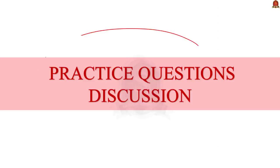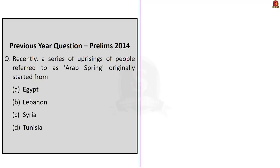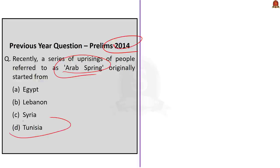Practice prelims question from 2014: 'A series of uprisings referred to as Arab Spring originally started from — Option A: Egypt, B: Lebanon, C: Syria, D: Tunisia.' As discussed in the article, the correct answer is Option D, Tunisia. Arab Spring began with the overthrow of President Ben Ali of Tunisia.